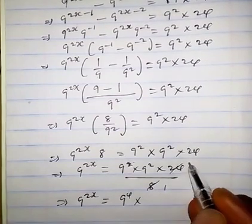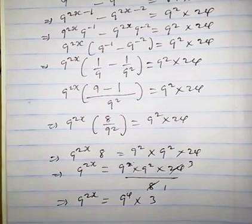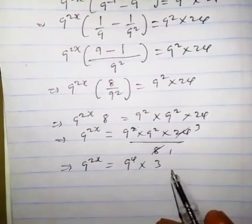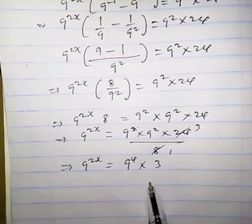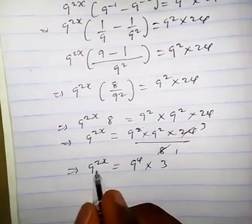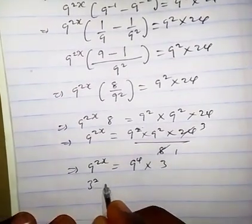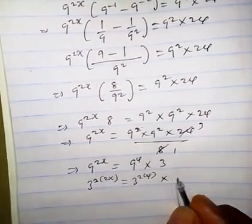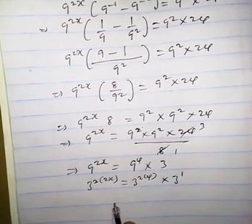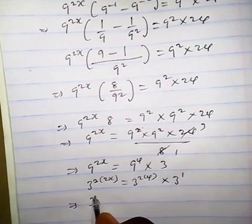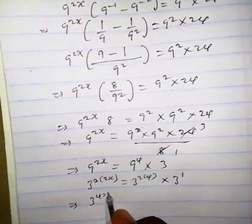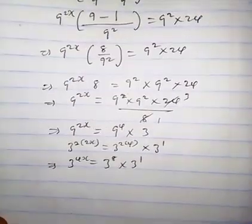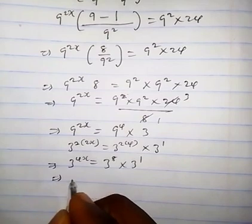8 here, 1 — 8 times 3 equals 24, so we have 9^(2s) equals 9^4 times 3. We write this expression in terms of base 3: 9 is 3², so 3^(2×2s) equals 3^(2×4) times 3^1, which implies 3^(4s) equals 3^8 times 3^1, which is 3^(8+1) = 3^9.